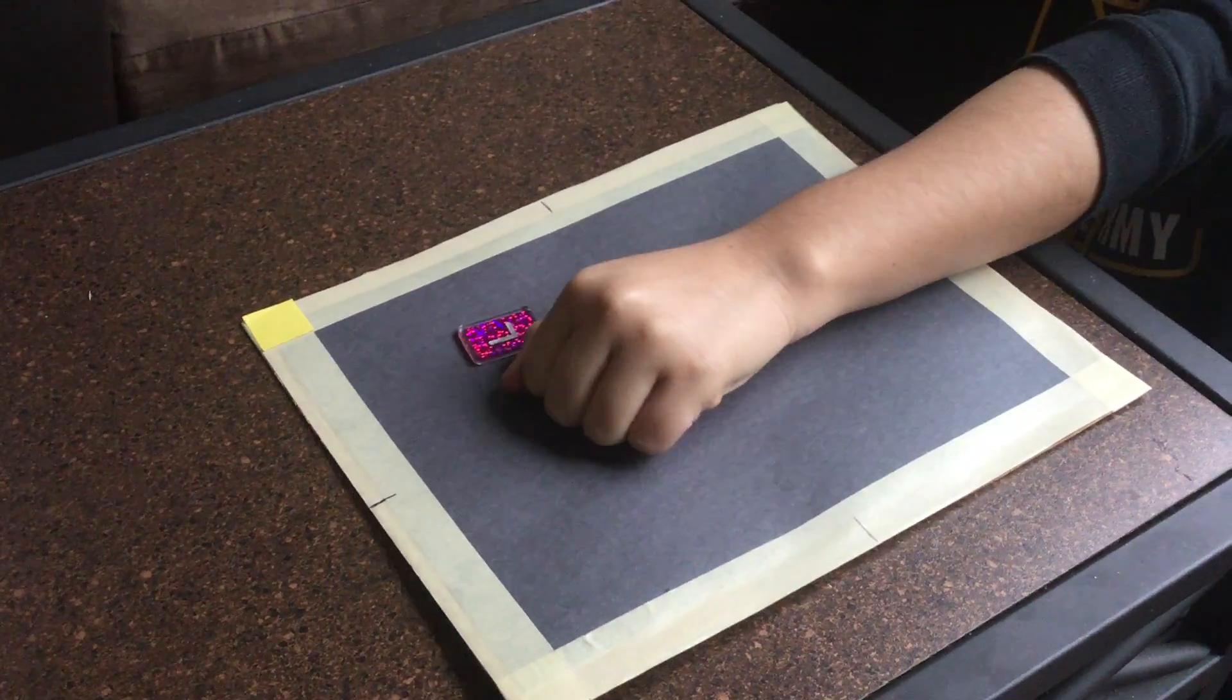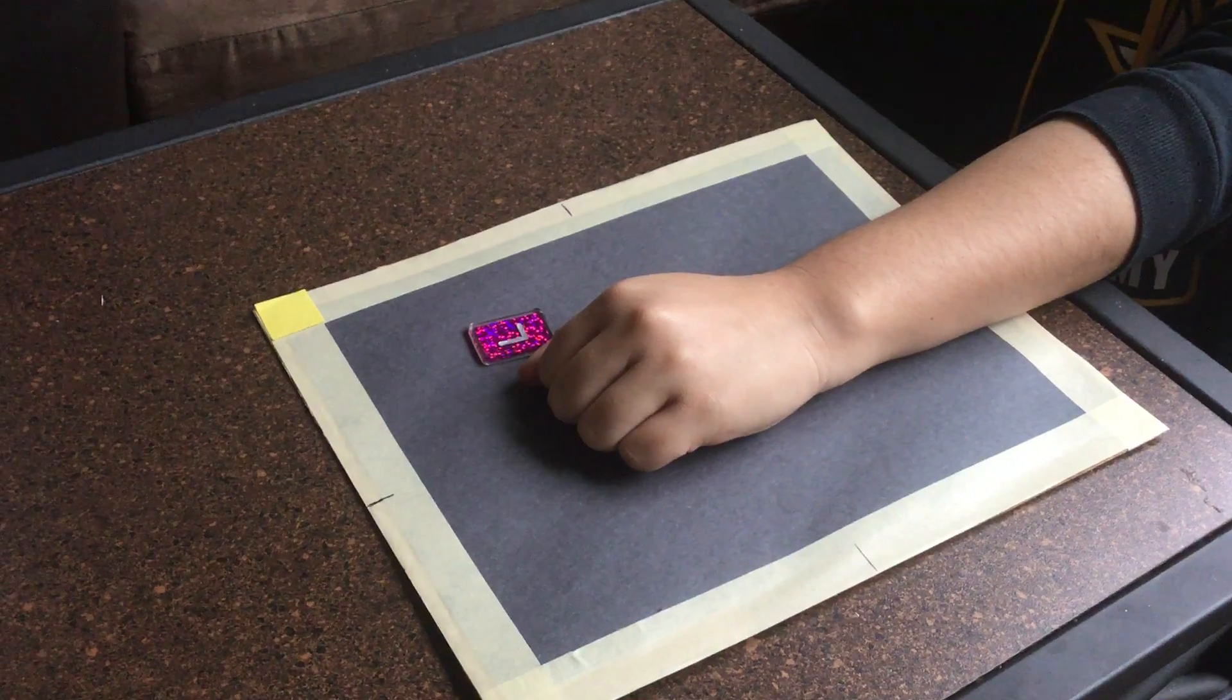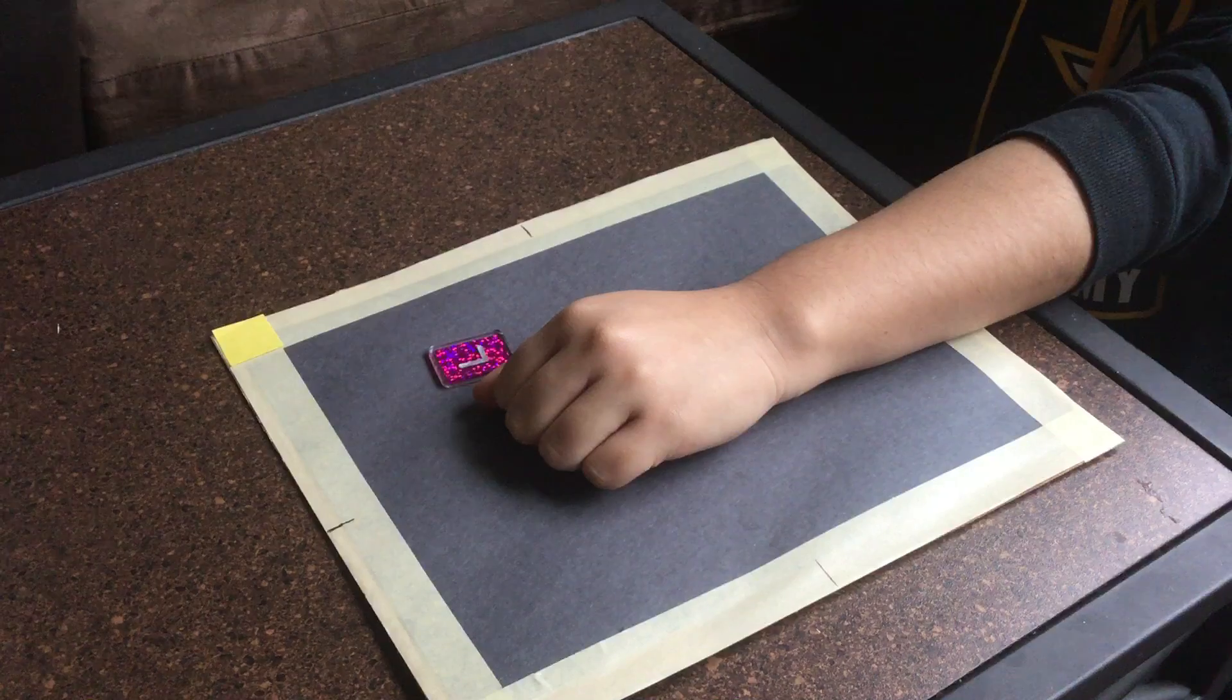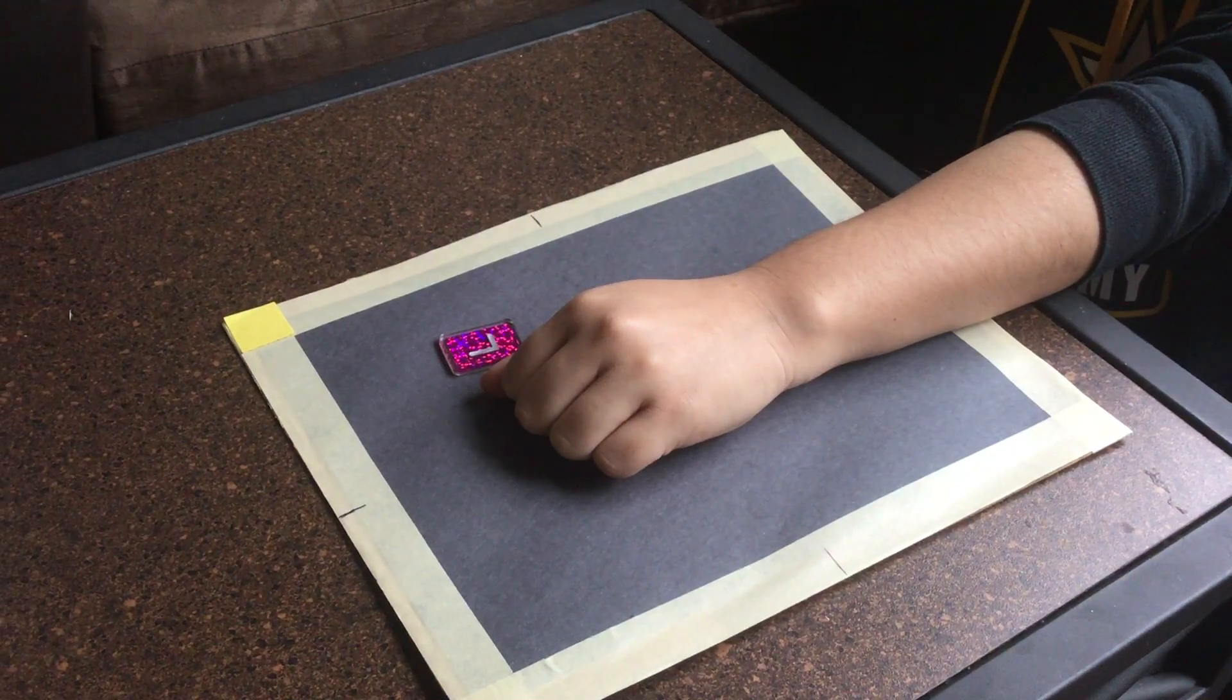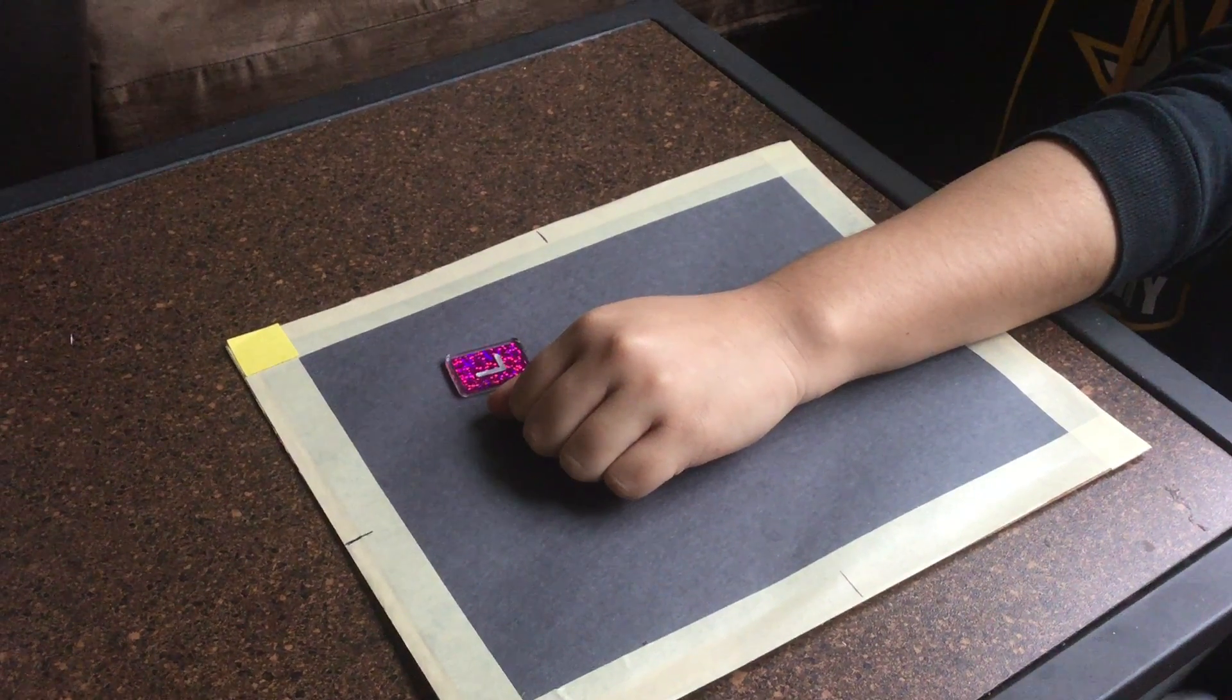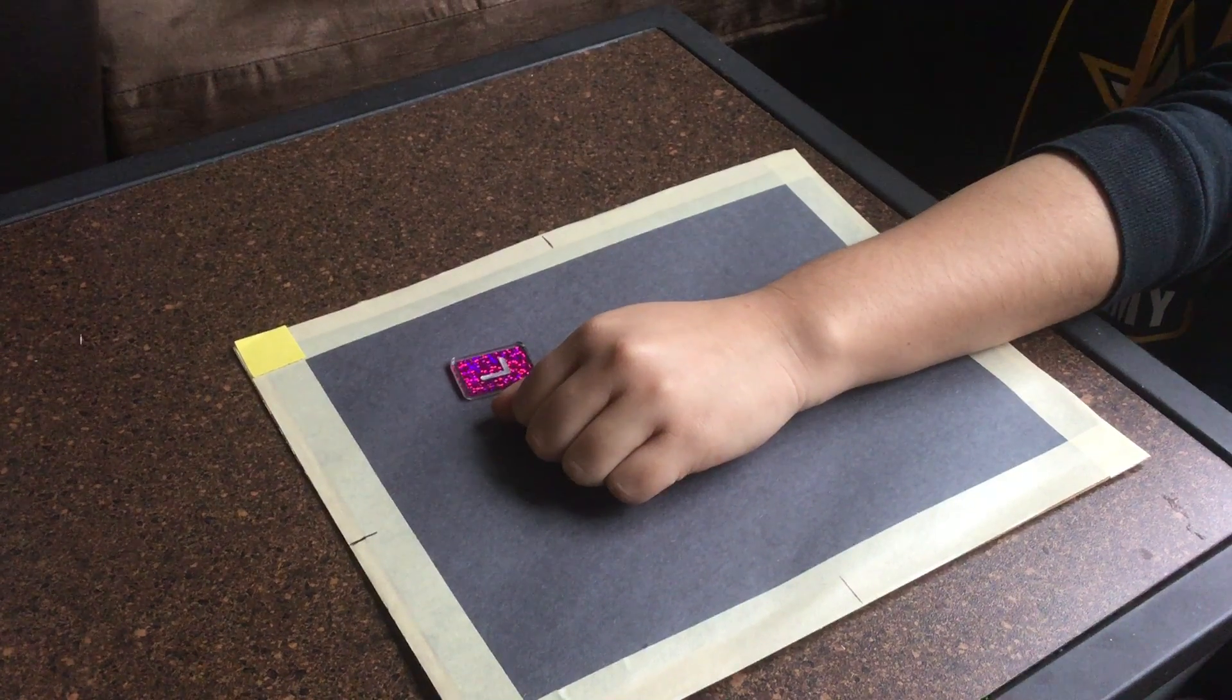So we will place our hand like this, PA wrist, and we see that the central ray is going to go through the mid-carpal area and the collimation is going to include the carpals and the proximal metacarpals and the distal ulna and radius.